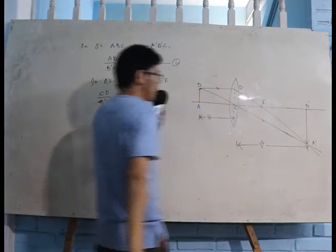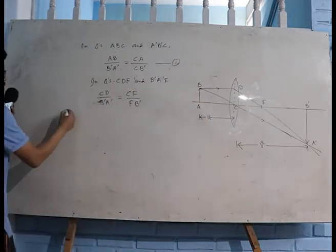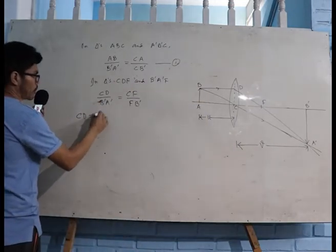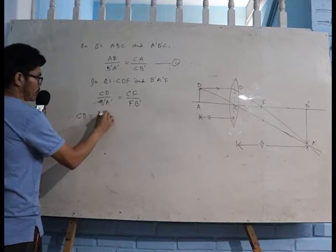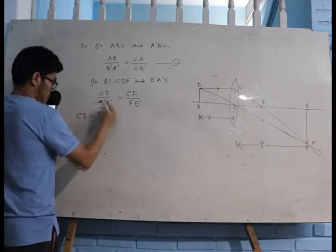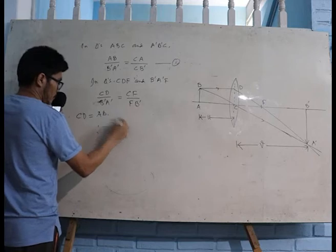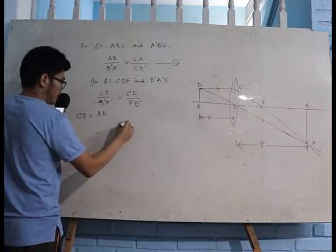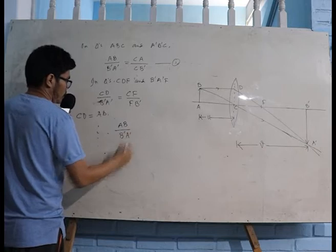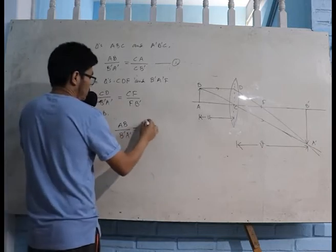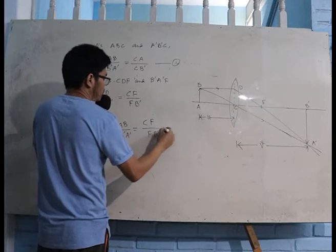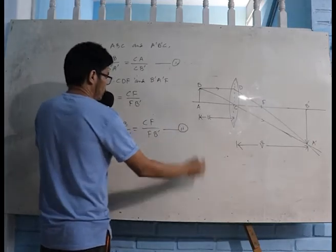If you look at the figure, AB is exactly equal to CD because these two rays are parallel. So CD will be replaced by AB. Therefore this can be written as AB divided by B'A' is equal to CF divided by FB'. Let us call this equation number two.